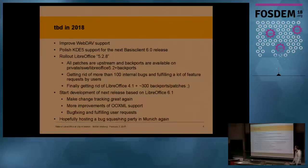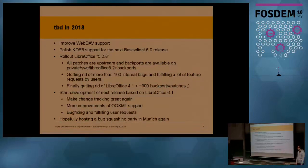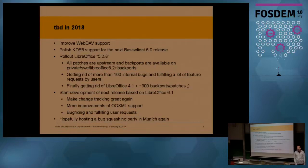What is to be done in 2018? We want to improve WebDAV support, polish the KDE5 support for the next BasisClient 6.0 release which uses KDE5, and roll out LibreOffice 5.2.8. All patches for this version are upstream and backports are available on our private branch. We are getting rid of more than 100 internal bugs, fulfilling many feature requests, and finally getting rid of LibreOffice 4.1 plus 300-something backports and patches.